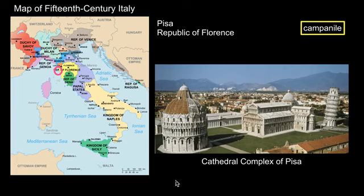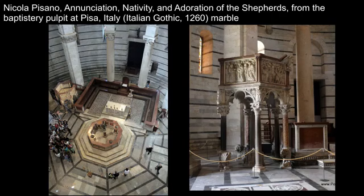We're starting off in Pisa at the same complex where the famous Leaning Tower is — it is actually a bell tower called a Campanile. Pisa is part of the Republic of Florence, a powerful city-state at this time. As was typical for Italian cities, Pisa has at its heart a cathedral complex with a cathedral, a campanile, and a baptistry. We come here in the 1260s, a time of relative prosperity for Pisa, which allowed the archbishop to commission a special work of art for the baptistry. It is by Nicola Pisano, a young artist who eventually settled in Pisa, thus earning his last name.